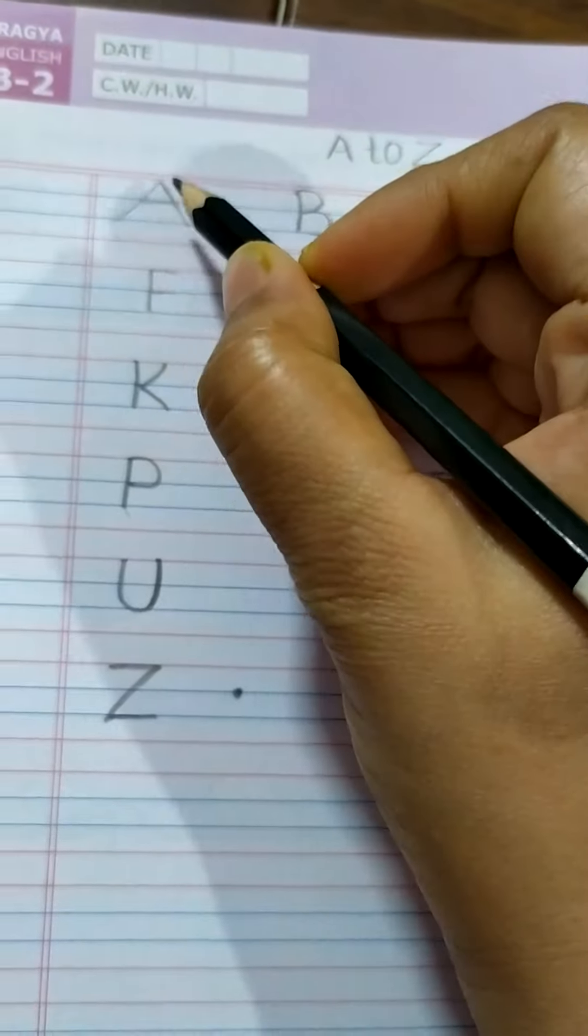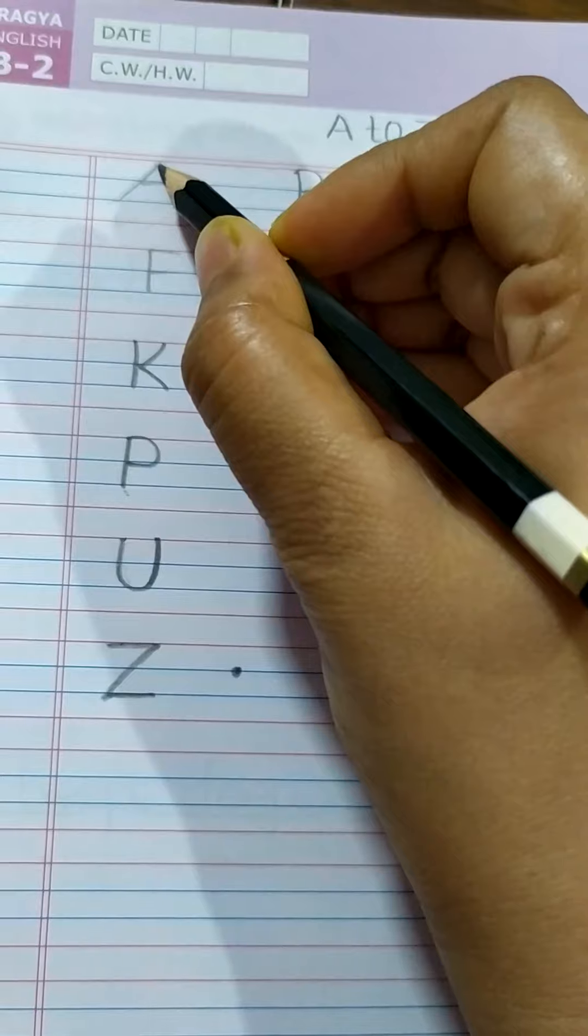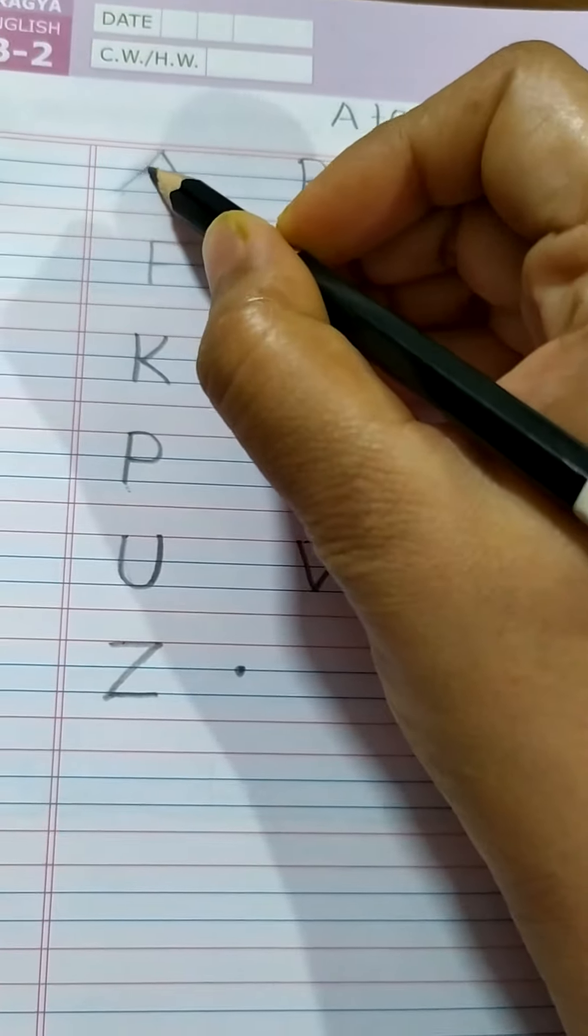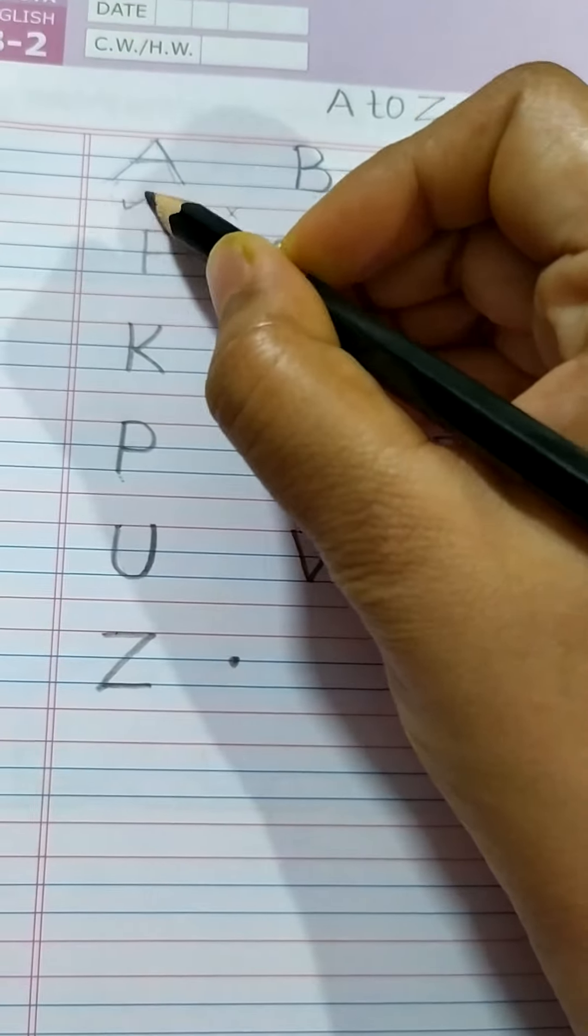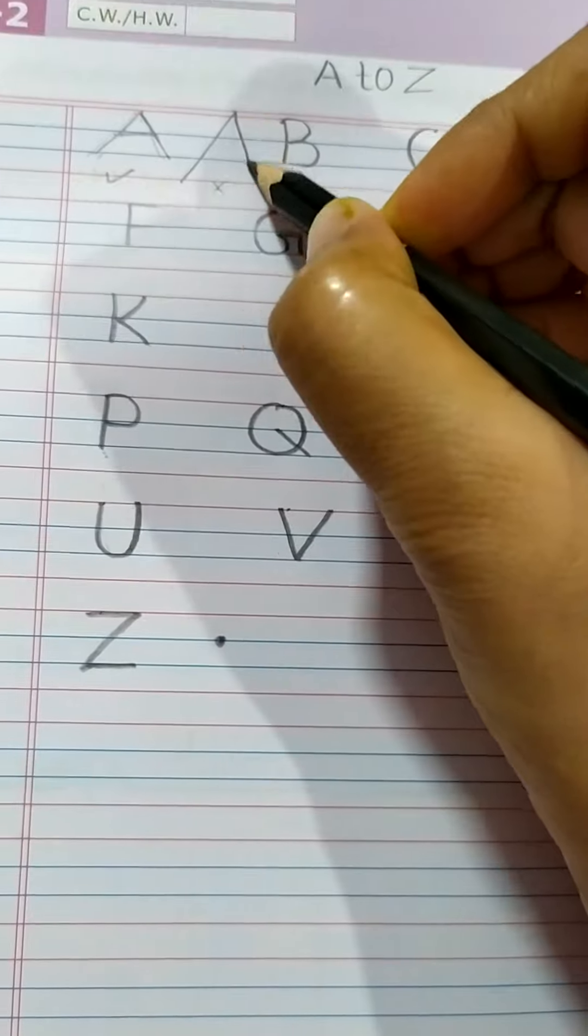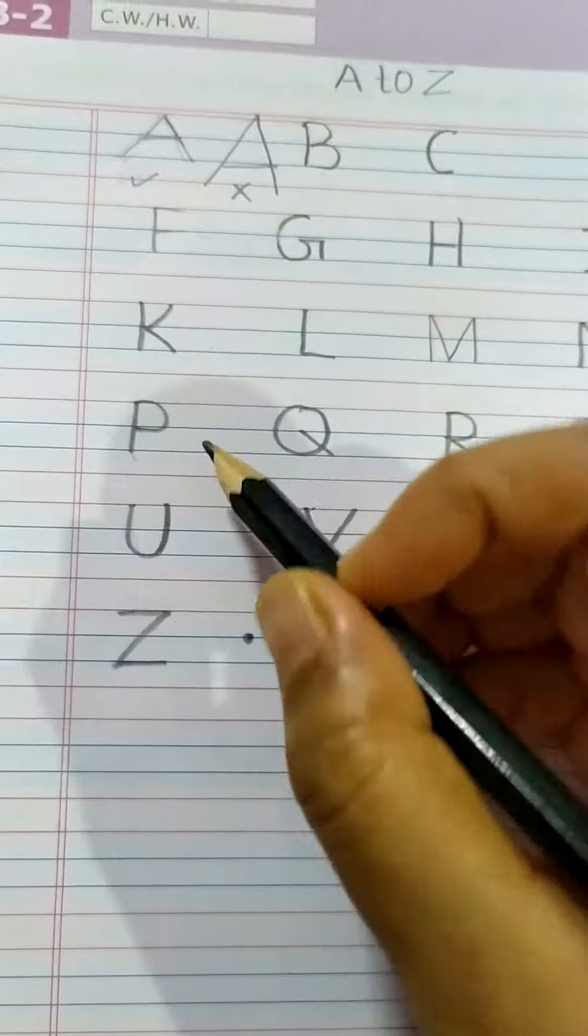When we need to write letter A, we should write from the blue line to red line. Then here you should put here slant, another slant and one sleeping line. You should write like this. If you are going to write from the red line to red line, again red line to red line and sleeping line, this is wrong children. Don't write like this.